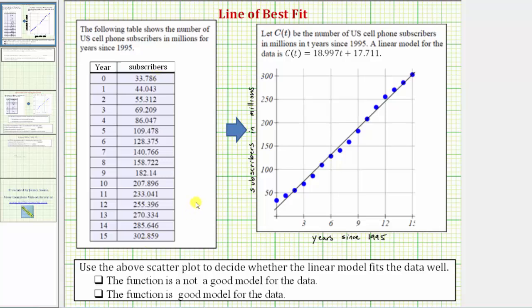One way to analyze the data would be to create a scatter plot. A scatter plot would be a graph of the ordered pairs on the coordinate plane, and the scatter plot is shown here in blue.